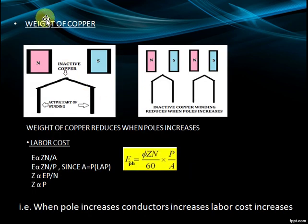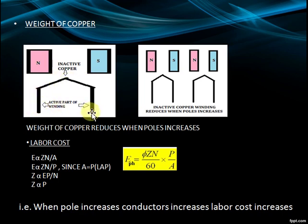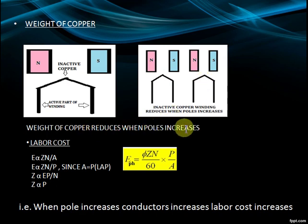Weight of Copper: A 2-pole machine is shown with a turn of winding. These are the active parts of the winding and these are the inactive parts. When number of poles increases, the weight of the active part reduces, and thus weight of copper reduces when poles increase.